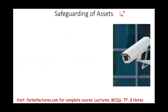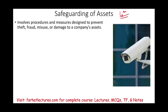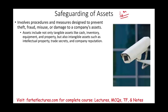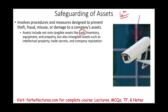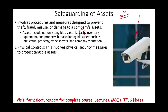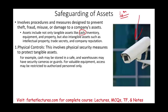The fourth objective is safeguarding of assets — procedures to prevent theft, fraud, misuse, or damage to company assets including cash, inventory, equipment, property, computers, furniture, and intangible assets such as intellectual property, trade secrets, and company reputation. Physical controls include security cameras, security personnel, fences, and locks. Cash may be stored in a safe, warehouses may have cameras or guards, and access to valuable equipment may be restricted to authorized personnel.